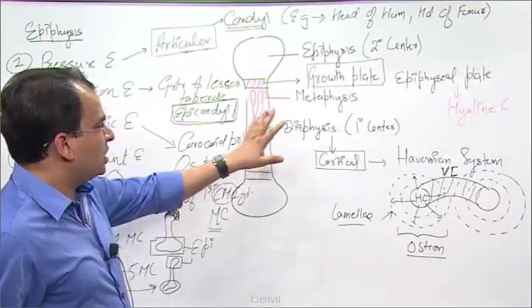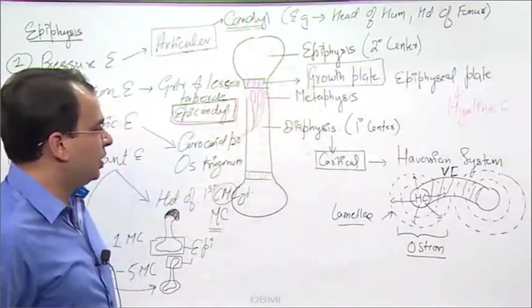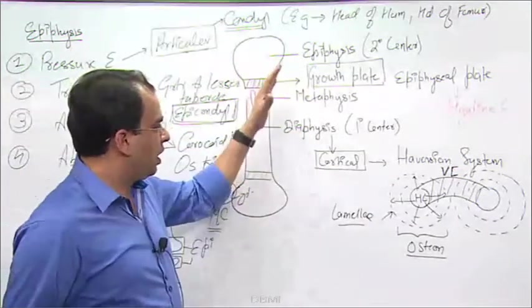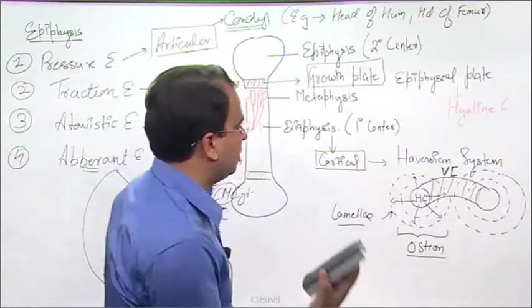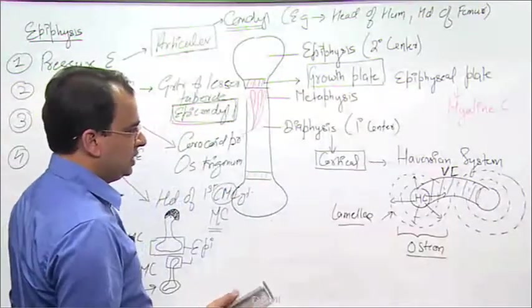One more thing which I would like to discuss on this diagram only and that is about the covering of the bone, which is periosteum. Now let's just see what is periosteum and how it is present.